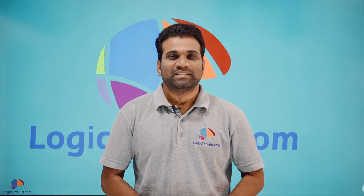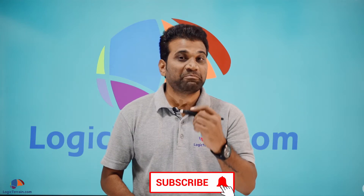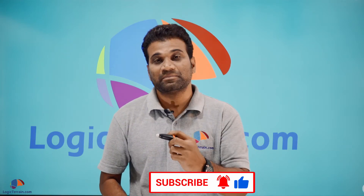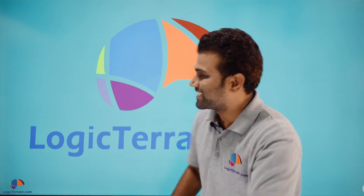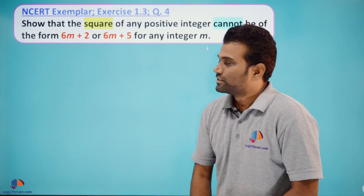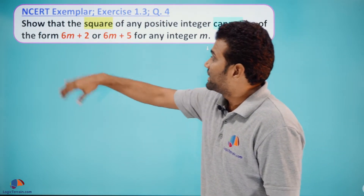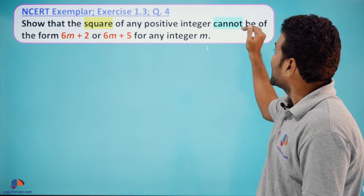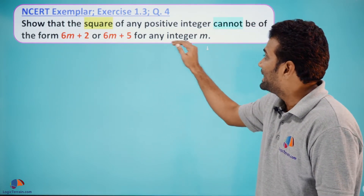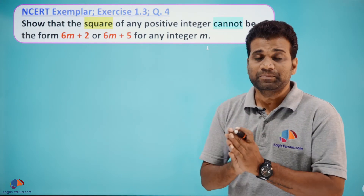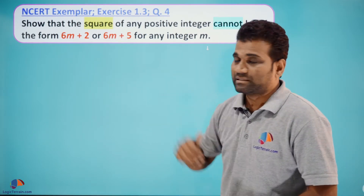Hello everyone, welcome. I'm Lakshminarayana from Logic Terrain. I'm here to present one of the very important and hard questions of NCERT Exemplar from Chapter Real Numbers of Class 10. Here is our question: NCERT Exemplar Exercise 1.3, Question 4. The statement is: show that the square of any positive integer cannot be of the form 6m+2 or 6m+5 for any integer m.